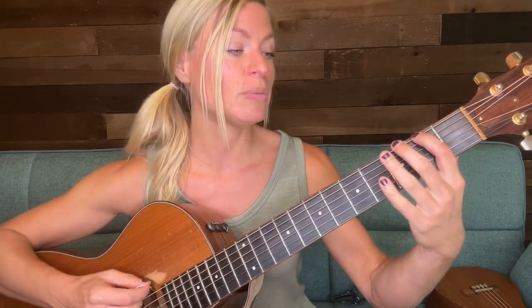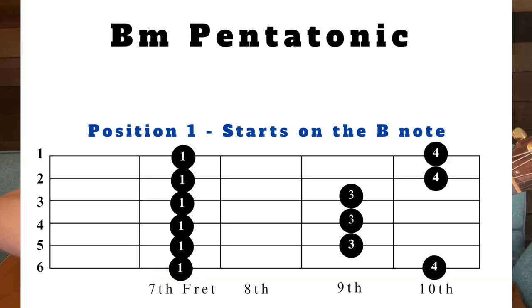E is the open note, so if you know that, you can go up if you know your notes: F, F sharp, G, G sharp or A flat, A, A sharp or B flat, B on the seventh fret. So if you want to do the B minor pentatonic scale, all you have to do is shift all the positions over. If you know all the patterns, this will be very easy.